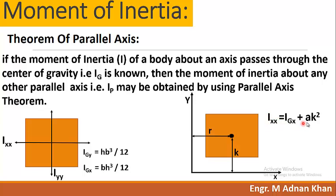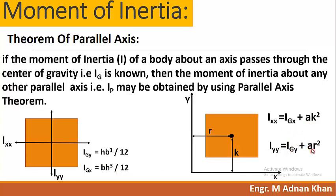IXX equals IGX plus AK squared. Here, IGX is the moment of inertia about the centroidal axis, equal to BH³ divided by 12. By adding AK² and AR², we get IXX — the moment of inertia about the parallel axis. Similarly, IYY is the moment of inertia about the Y-axis. This completes the explanation of the Theorem of Parallel Axis.